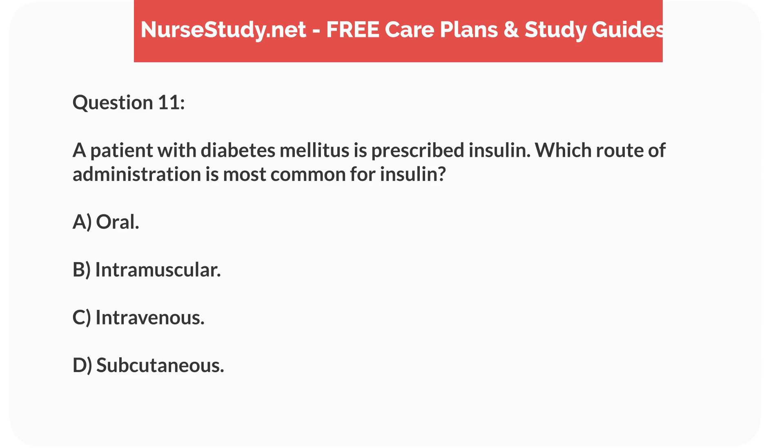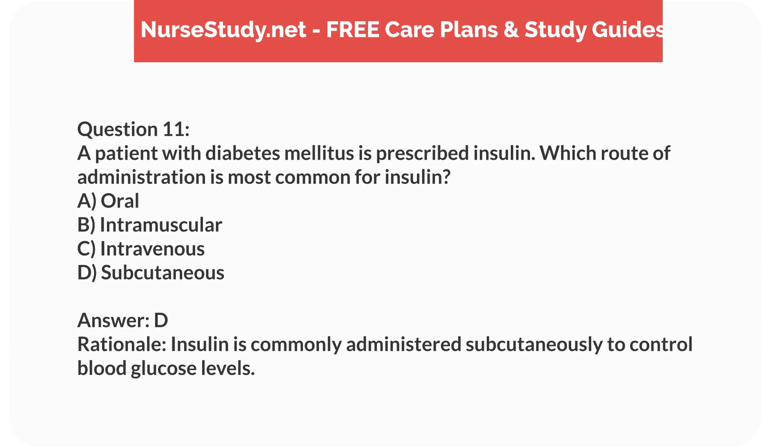Question 11. A patient with diabetes mellitus is prescribed insulin. Which route of administration is most common for insulin? A. Oral. B. Intramuscular. C. Intravenous. D. Subcutaneous. Answer: D. Rationale: Insulin is commonly administered subcutaneously to control blood glucose levels.